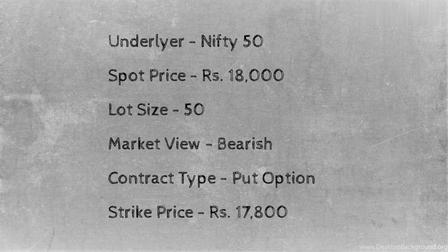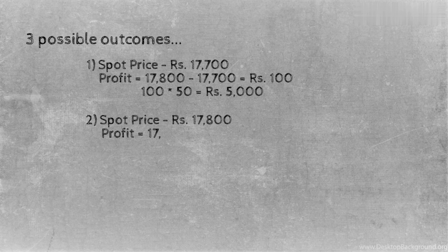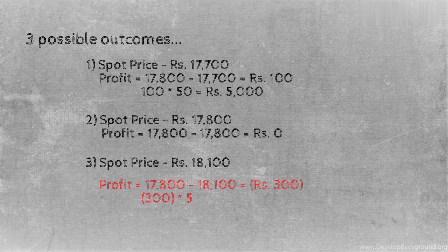There are three possible outcomes. First, the spot price declined to ₹17,700. If Ramesh chooses to exercise his right to sell, he will make a profit as he gets to sell at a higher price — his profit will be ₹100 into 50 units, equal to ₹5,000. Second, if the spot price is ₹17,800, Ramesh may or may not exercise his right to sell, as he will neither make a profit nor incur a loss. Third, if the market goes in the opposite direction and the spot price rises to ₹18,100, Ramesh will incur a loss equal to 17,800 minus 18,100, that is ₹300 into 50 units, equal to ₹15,000.